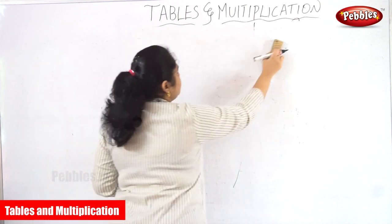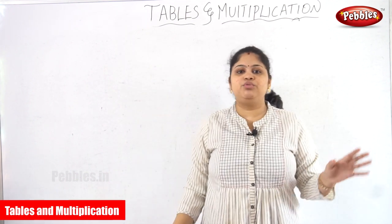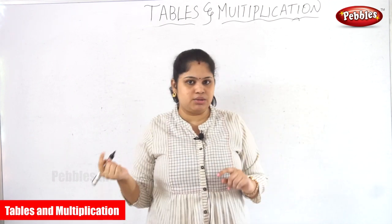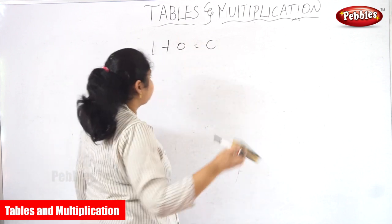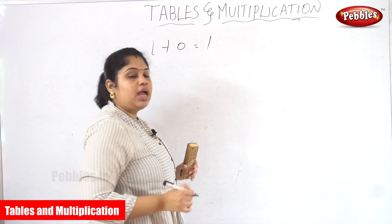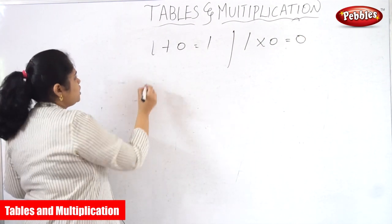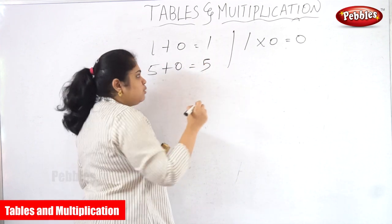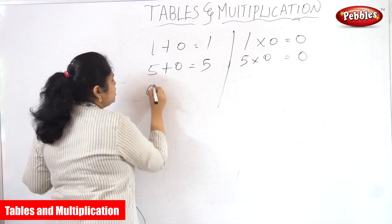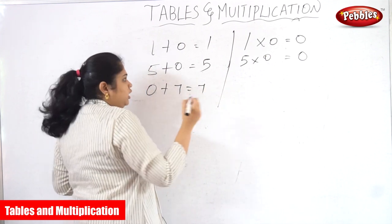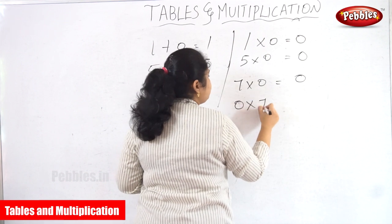Multiplications will be very different compared to addition. The very important difference is: in addition, 1 plus 0 is equal to 1, but in multiplication 1 into 0 is equal to 0. In addition, 5 plus 0 is 5, but in multiplication 5 into 0 is 0. In addition, 0 plus 7 is 7, but in multiplication 7 into 0 or 0 into 7 is 0.